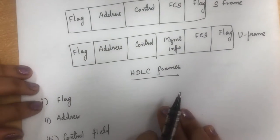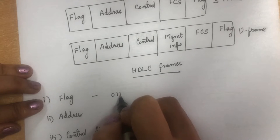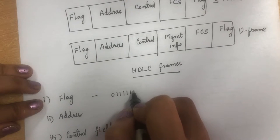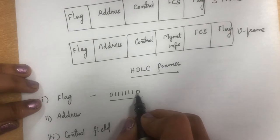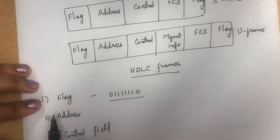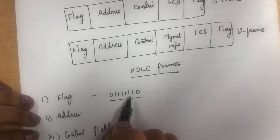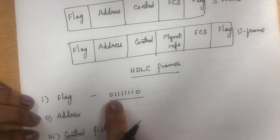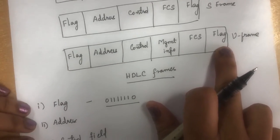The Flag field contains a synchronization pattern: zero followed by six ones and then zero (01111110). This pattern is available both at the beginning and at the end of the frame, and is used as a delimiter for the frame.